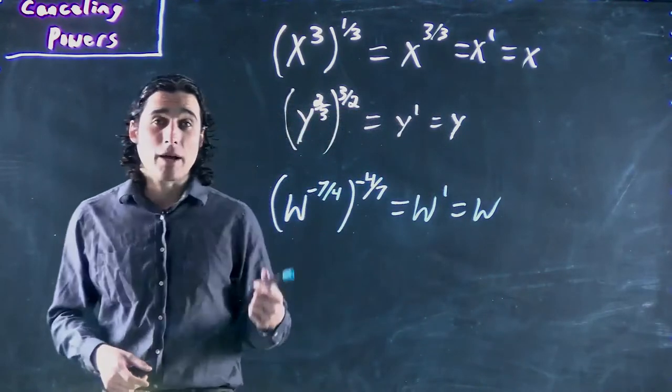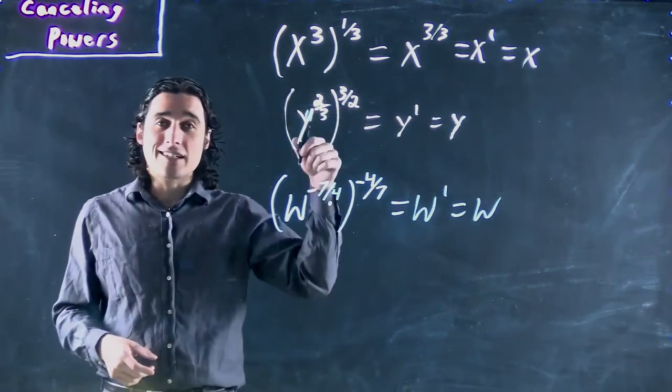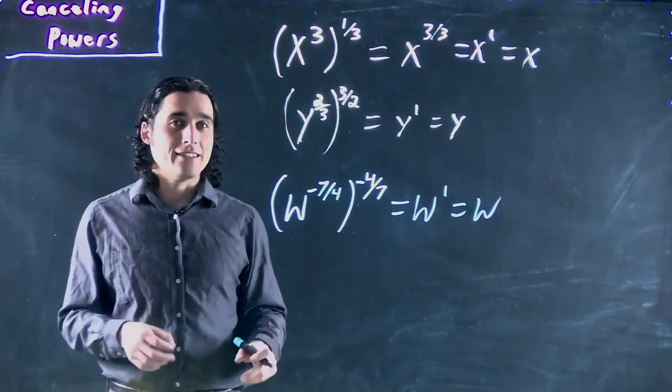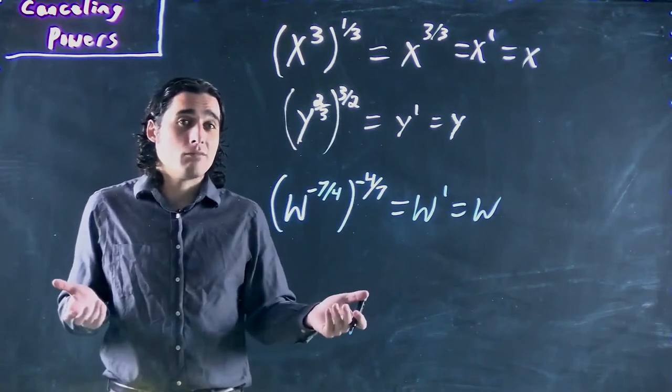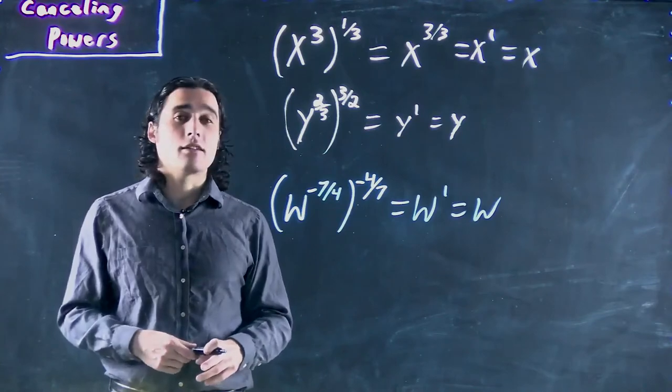Every single time you want to cancel a power, once you've got your equation down to just the power, multiply both sides by the inverse and evaluate. And that is it.